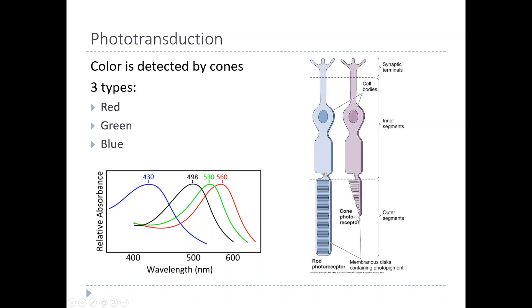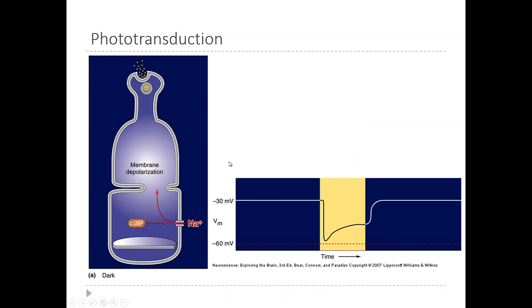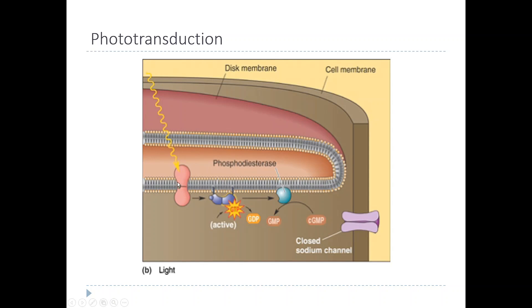But of course, the probably most important difference between cones and rods is that cones exist in three different types. Each type of cone expresses a different kind of opsin protein. Remember that opsin is the protein that binds to retinal and is activated by light. So the wavelength of light that activates the retinal is dependent on the type of opsin that it's bound to.